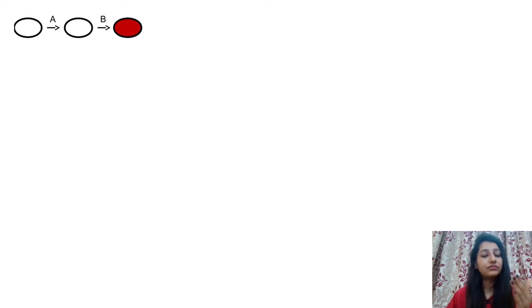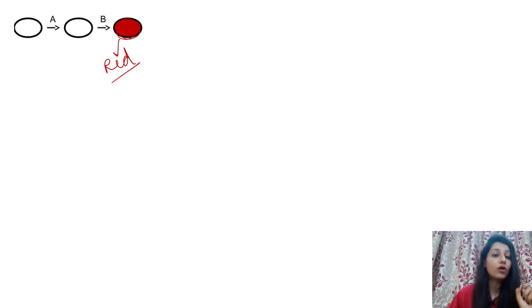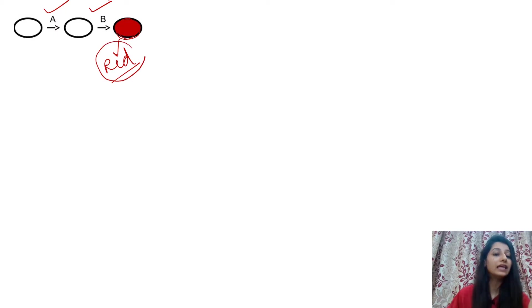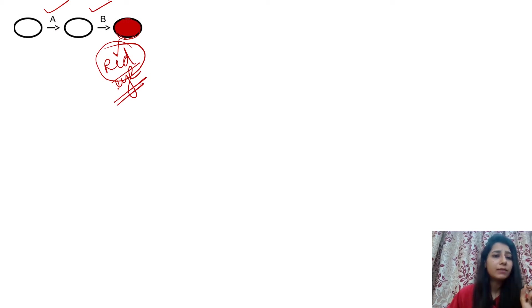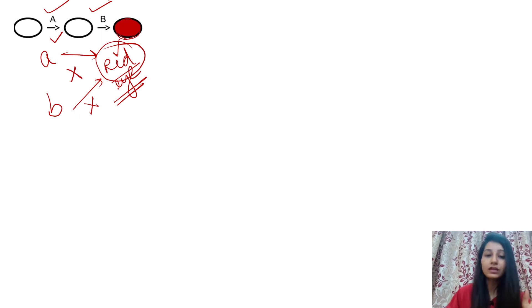Let's see a little bit of theory first so that you will be able to solve the problems easily. In this diagram you can see that the red eye color phenotype is present, and it is responsible because of two genes — gene A and gene B. Both genes are needed for this red eye color. If gene A is mutated, the red eye color will not be formed, and even if gene B is mutated, the red eye color will not be formed.